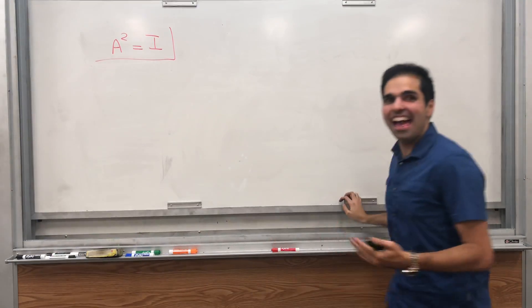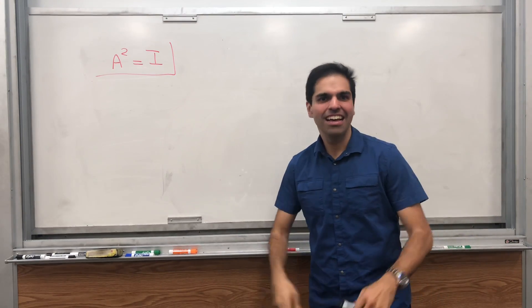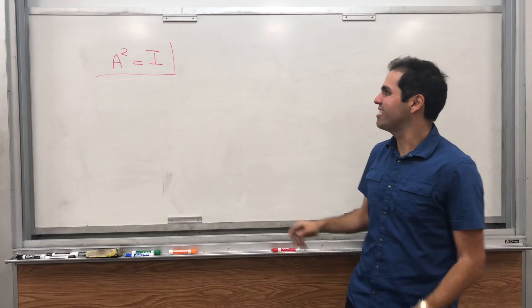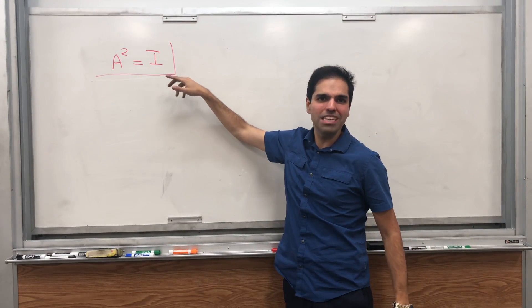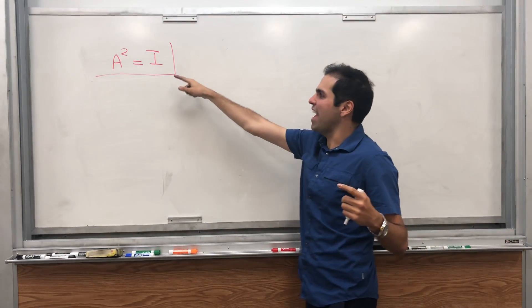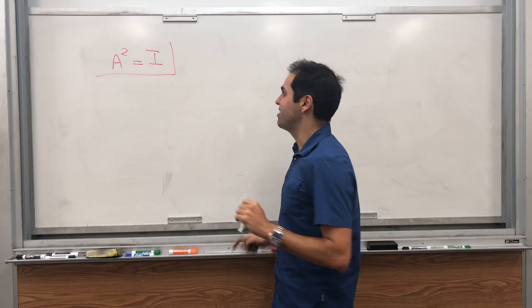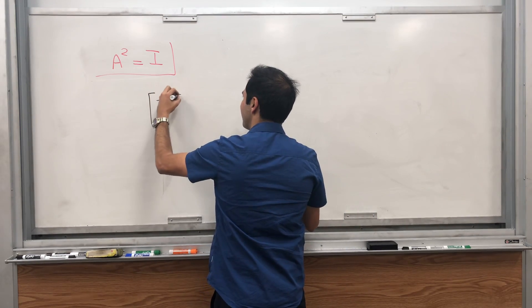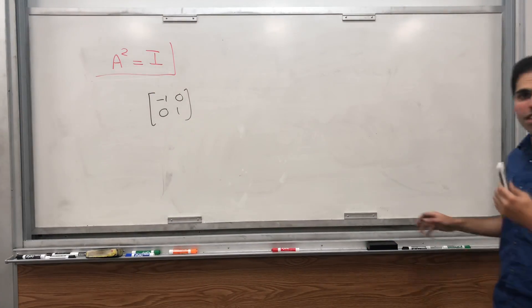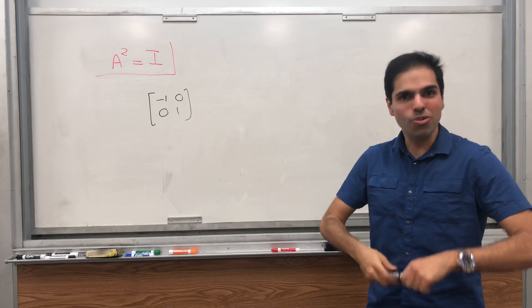All right, thanks for watching. In a previous video I found all the matrices such as A squared equals A, and in another video I found all the matrices whose square is the zero matrix. Now let's do the case of all the matrices whose square is the identity matrix. You have to understand if A squared is the identity, it does not mean that A is the identity or minus the identity. There are other matrices that satisfy this, for example minus one zero, zero one.